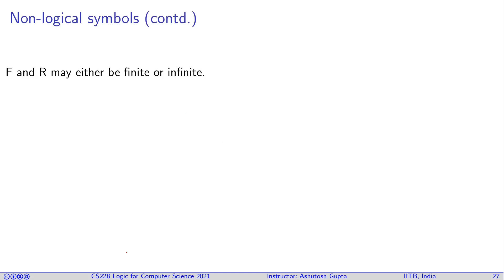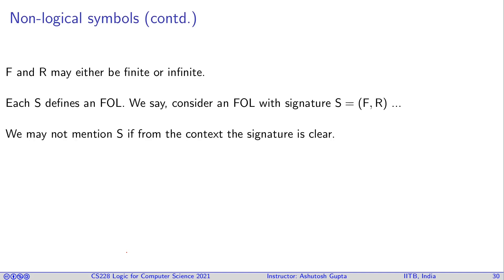F and R may either be finite or infinite. Each S defines a first-order logic. We say consider an FOL with signature S. We may not mention S if from the context the signature is clear. In propositional logic, we had no functions, only predicates, and all predicates had no parameters.